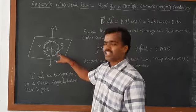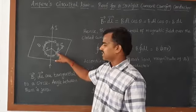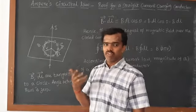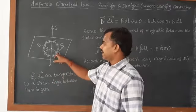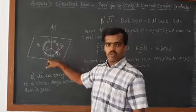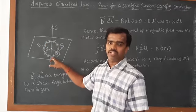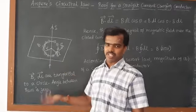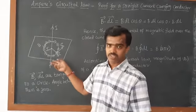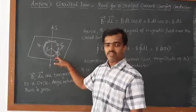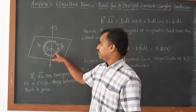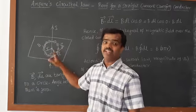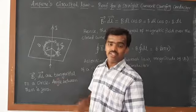The only change is in the dL part. If you are taking a small amount here and a small amount there, it will be variable. But if you are taking the overall closed curve, then it gives the perimeter or circumference of the circle. In the case of a circle, we use circumference. Considering all points, we calculate the line integral.